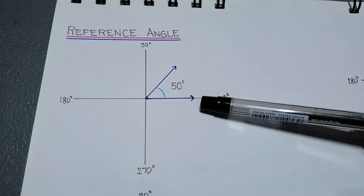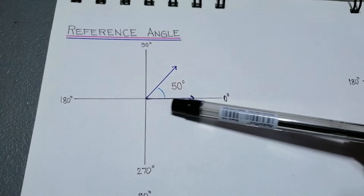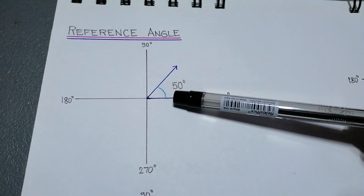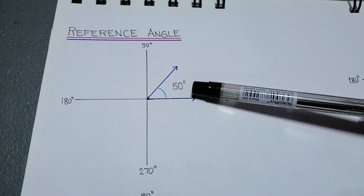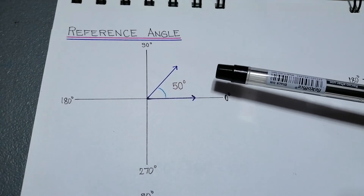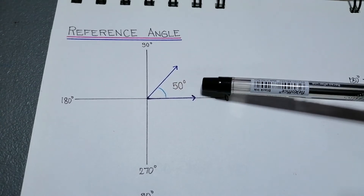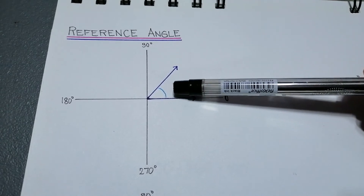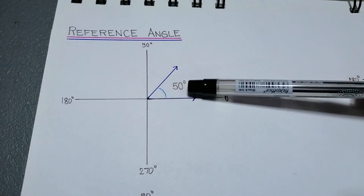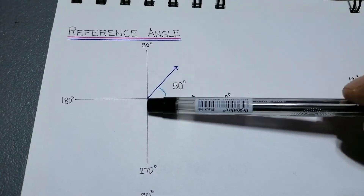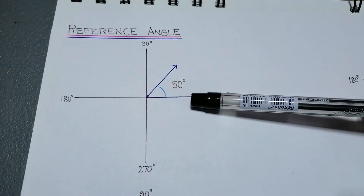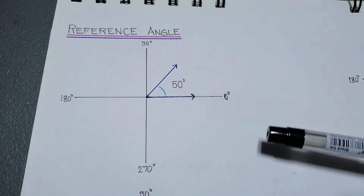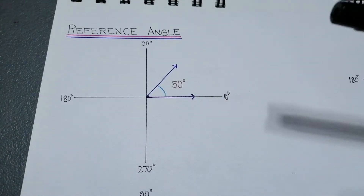We have here an angle formed by our initial side and the terminal side, and our angle measures 50 degrees. Since this is in our first quadrant, this acute angle is formed by our terminal side and our initial side which is along the positive x-axis. So this is already our reference angle.